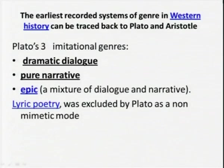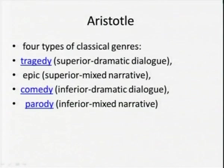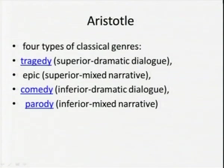The earliest recorded systems of genre in western history can be traced back to Plato and Aristotle. Plato had only three imitational genres based on dramatic dialogue, pure narrative, and epic — a mixture of dialogue and narrative — while lyric poetry was excluded as a non-mimetic mode. Aristotle extended this, based on mimesis, to four types of classical genres: tragedy, given the highest form of expression; the epic; comedy; and lastly parody as an inferior mixed narrative.